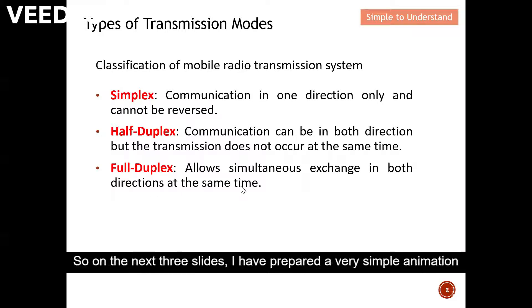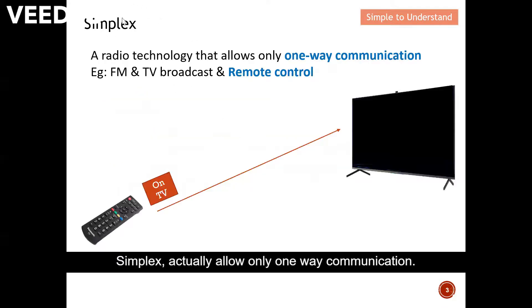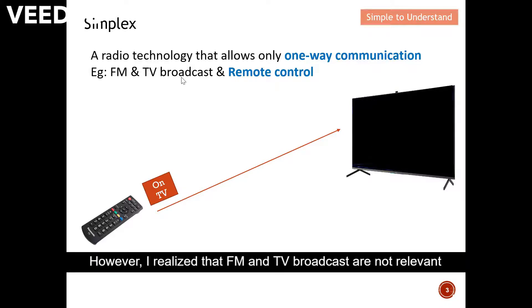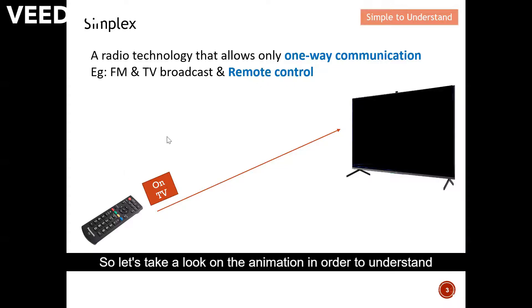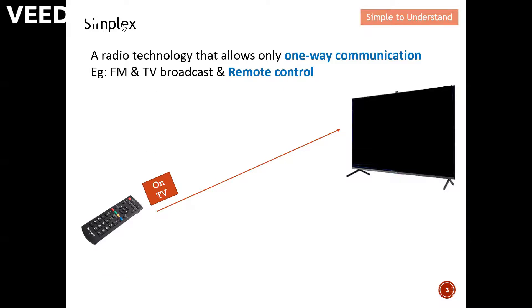On the next three slides I have prepared a simple animation to describe the different types of transmission mode. Simplex allows only one-way communication. Examples of simplex communication include FM and TV broadcasts — though those are less relevant now since FM and TV have gone digital. Another example of simplex is a remote control, which works in only one way. Let's look at the animation to understand simplex communication.